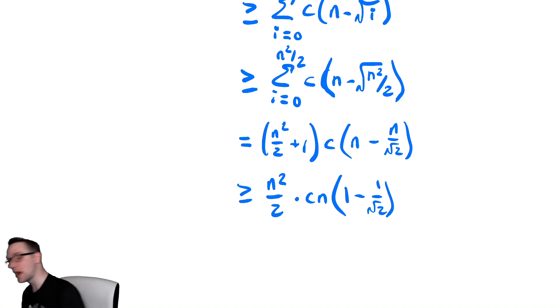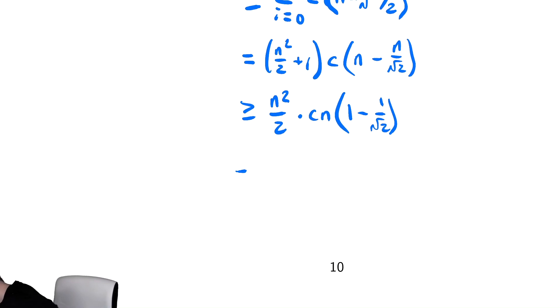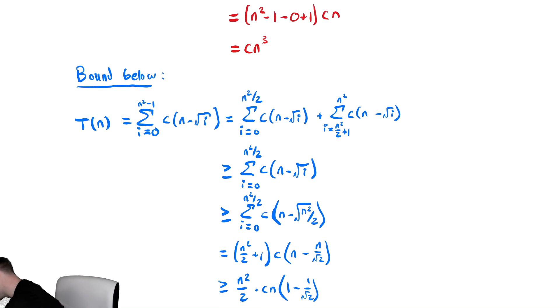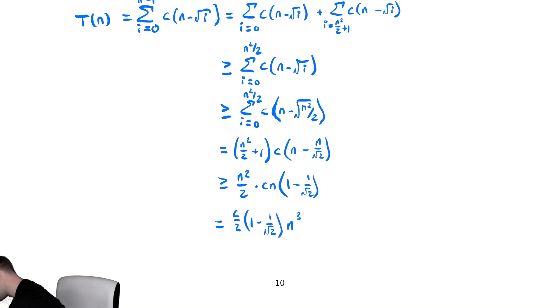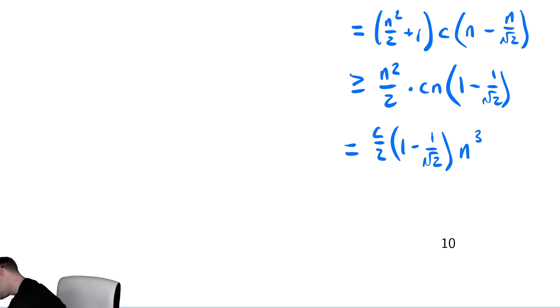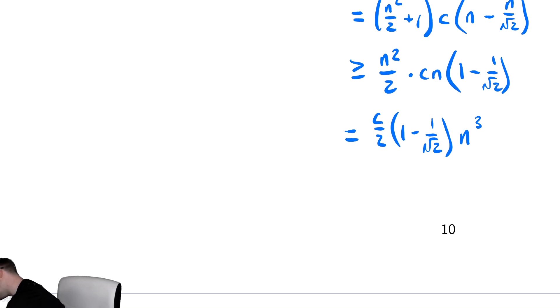I don't really give a crap what that number is, it's a number. So I have a bunch of numbers times n squared times n. This is equal to c over 2 times 1 minus 1 over radical 2, again some messy number like we saw before, times n cubed. So we are bounded above by n cubed and bounded below by some other different number times n cubed. So the final thing must be in theta of n cubed.